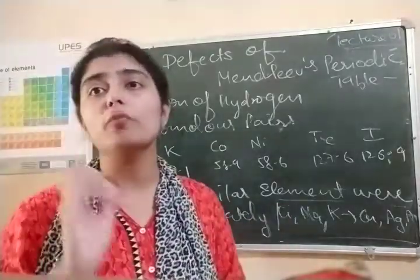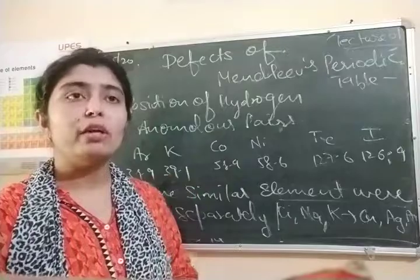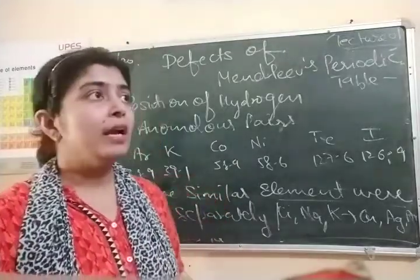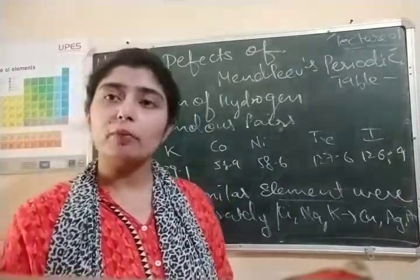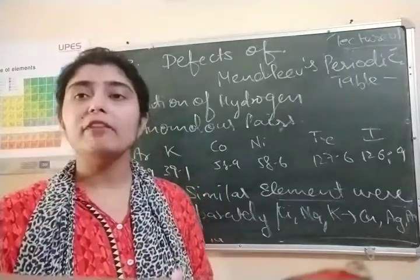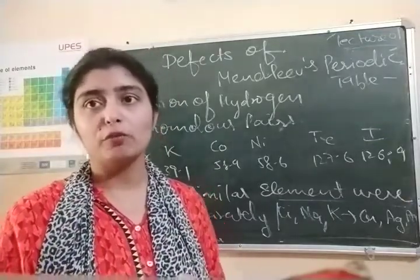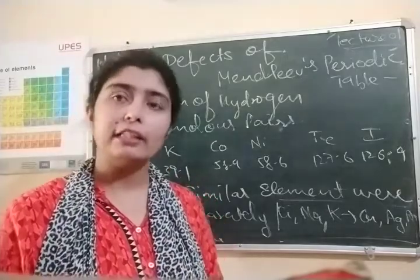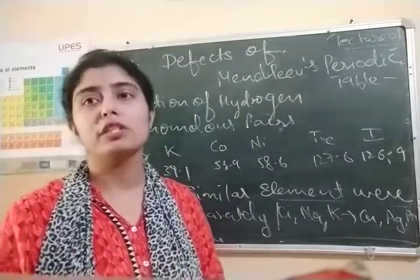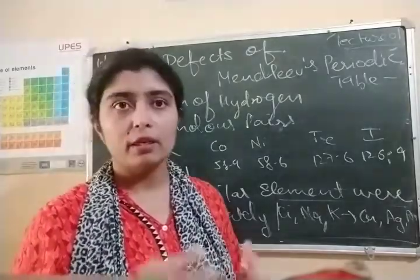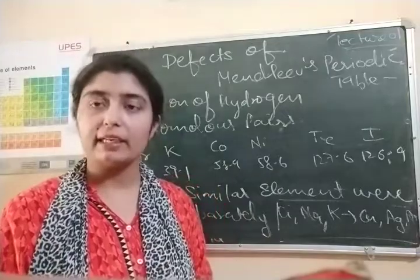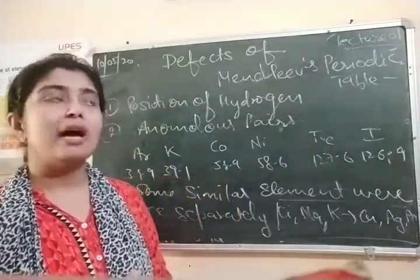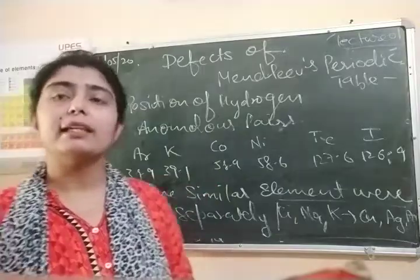Another limitation of Mendeleev's periodic table is that the cause of periodicity was not explained. And the fifth limitation is that Mendeleev did not explain the exact position of lanthanoids and actinoids in his periodic table.